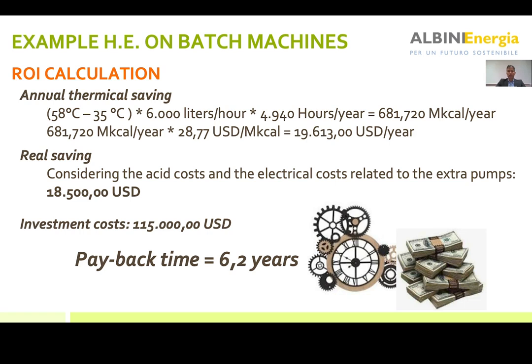Over here you can find the savings. The saving is mainly related to the thermal energy that you can save because you have warmed the temperature of the second and third rinsing - the reusable water from 35 degrees to 58 degrees. You have to multiply such a difference by 6,000 liters per hour and the number of hours per year, which are almost 5,000.